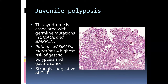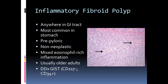Inflammatory fibroid polyp is nicely described — it has a lot of inflammation and a fibroid or myofibroblastic-type appearance. It can occur anywhere in the GI tract but is most commonly seen in the stomach, usually in the pre-pyloric area. It's generally considered non-neoplastic, although with advanced molecular techniques it wouldn't surprise me if some molecular abnormality were detected. These often have a very eosinophilic-rich inflammatory component and usually occur in older adults. The key differential is to rule out GIST or other mesenchymal neoplasm.